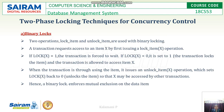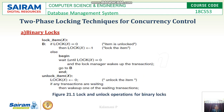When an item is unlocked, any request can access it. For binary locks, two operations are performed: lock_item and unlock_item. A transaction requests access to an item X by first issuing a lock_item(X) operation. If lock(X) equals zero, meaning it is unlocked, it will be set to one to lock it. Otherwise, the transaction must wait until the lock manager sets lock(X) to zero.